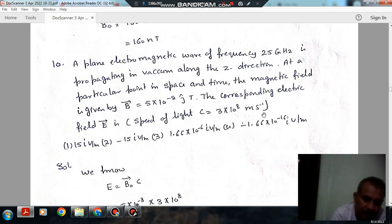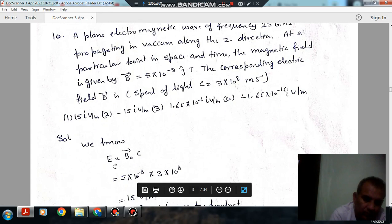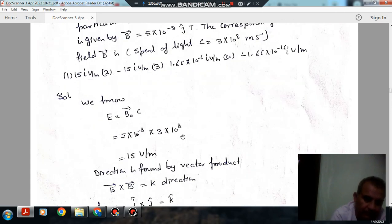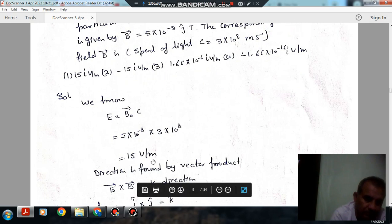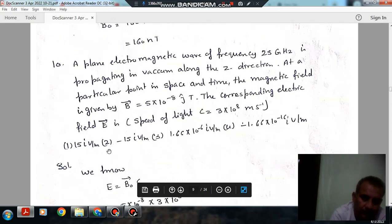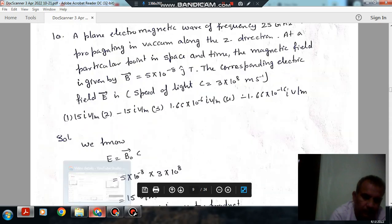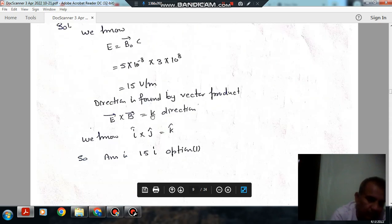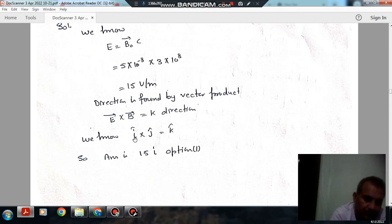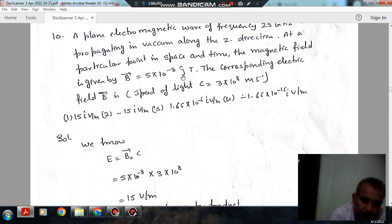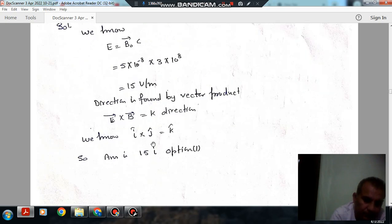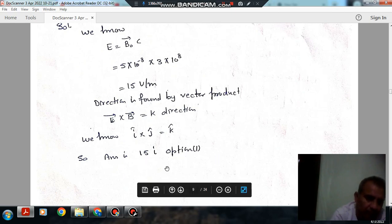E0 equals B0 times c. Now we have to find out the direction of E. As the waves are propagating in z direction, so E cross B should be k. This is possible when B is in j direction, so E must be in i direction. So answer is option 1.